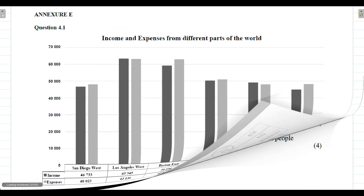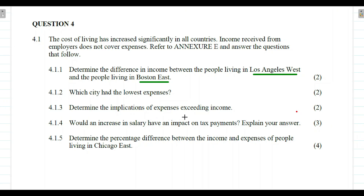Question 4.1.3: determine the implications of expenses exceeding income. 'Exceeding' means being more than. If your expenses are more than your income, that means you are living above your means. This will lead to taking out loans to account for additional expenses, leading to debt. You will have less buying power and will need to cut down on certain costs to make ends meet without getting into debt.